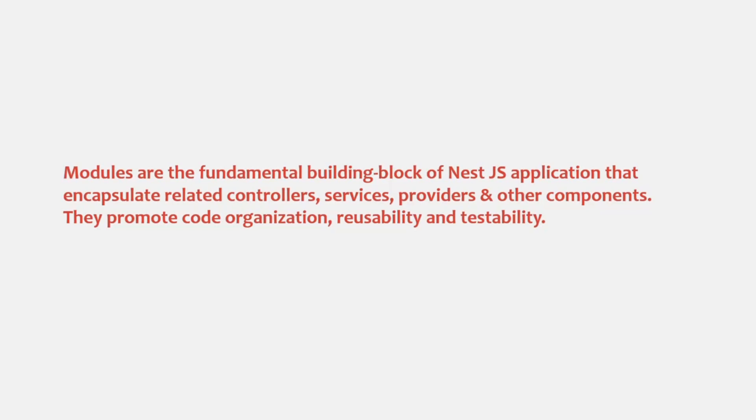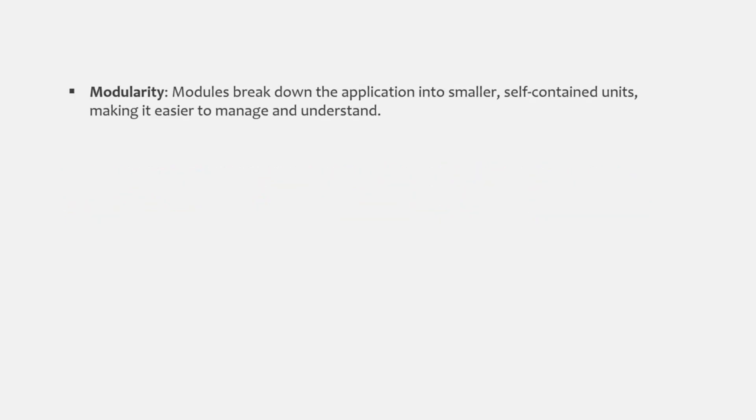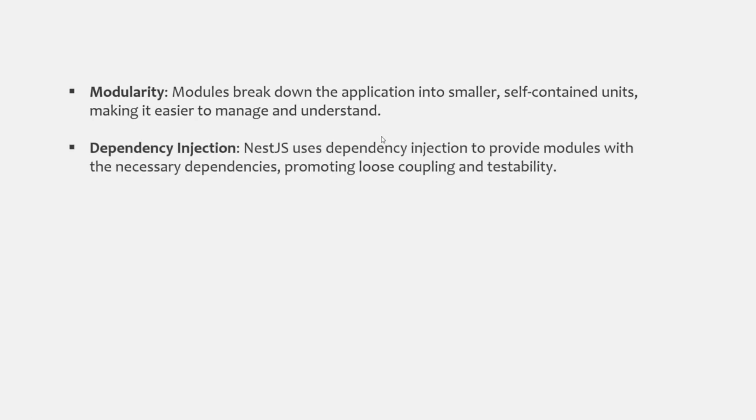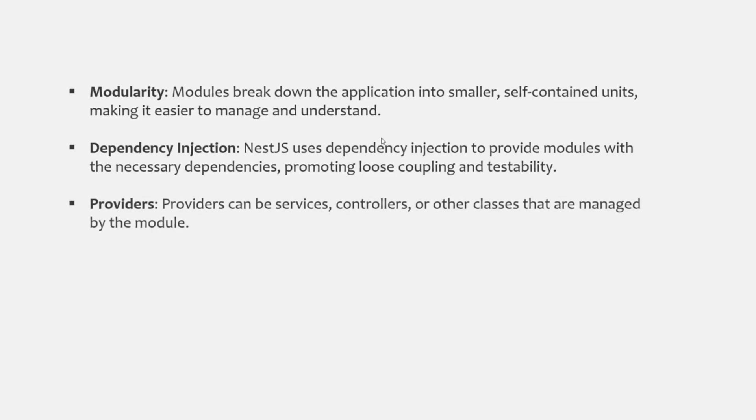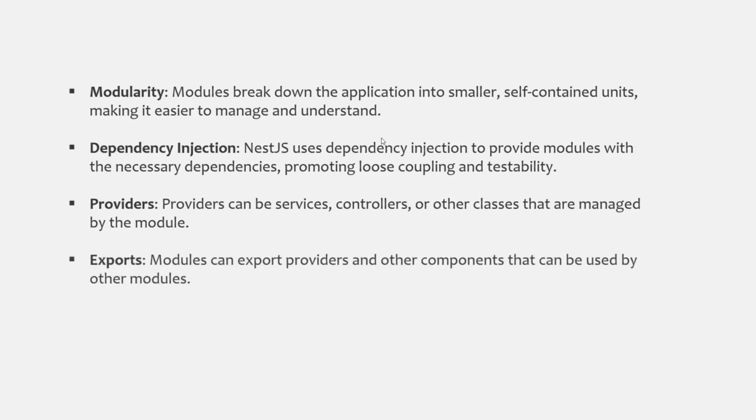So what do we use a module for? We use a module to break down the application into smaller self-contained units, making it easier to manage and understand the code. NestJS uses dependency injection to provide modules with the necessary dependencies, promoting loose coupling and testability. A module can be used to manage services, controllers or other classes. And finally, we can also import and export modules within other modules, which will allow one module to use the functionality of other modules.